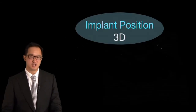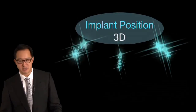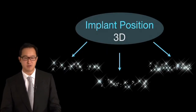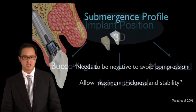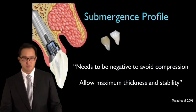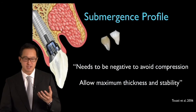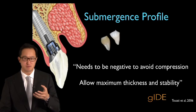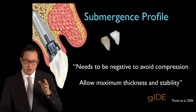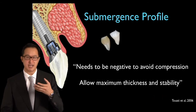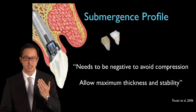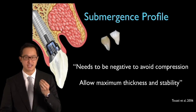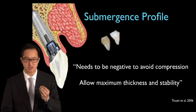You'll see positioning of the implants — buccal, lingual, apical, coronal positioning. We'll talk about the abutment shape and form, how we want our implant abutments to be more negative, especially in the mid-labial section to maximize tissue thickness.